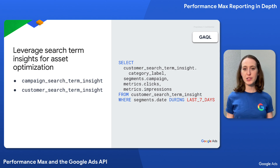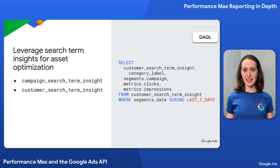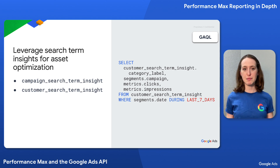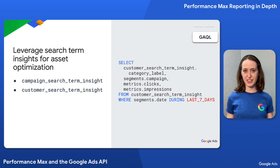As an example, say we want to identify our top-performing search term categories from the last seven days. We could query the Customer Search Term Insight report for category label, campaign resource name, clicks, and impressions to understand how performance looks across search categories, segmented by campaign. Further, we could compare this to the same data from previous weeks to get a sense of which categories or search terms are trending up or down.